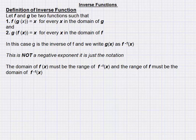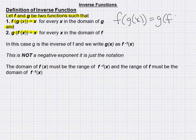So first, definition of an inverse function. There are a couple of ways we can do this — one is a more formal definition that has to do with composition functions. Let f and g be two functions such that f(g(x)) equals x for every x in the domain of g, and g(f(x)) equals x as well. So when I do the composition of these two functions f and g, no matter which way I do it, I get x in each case.